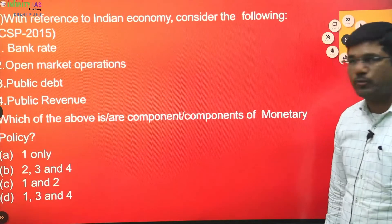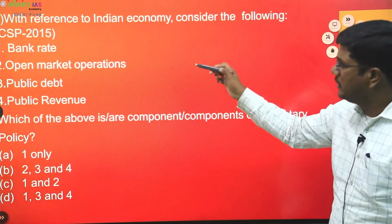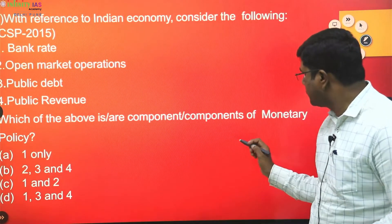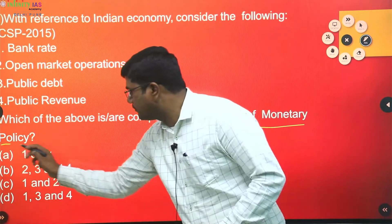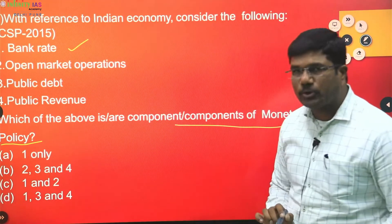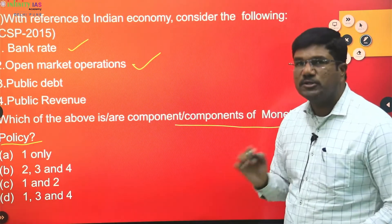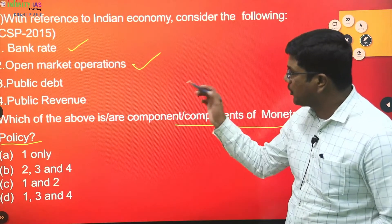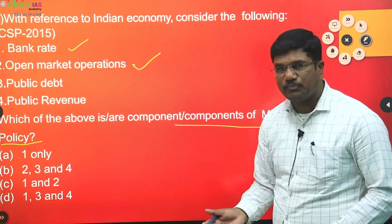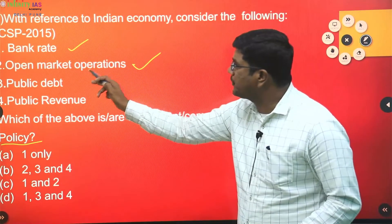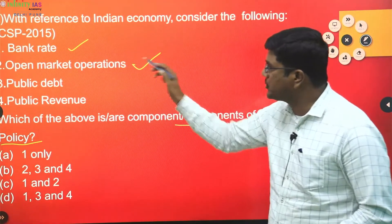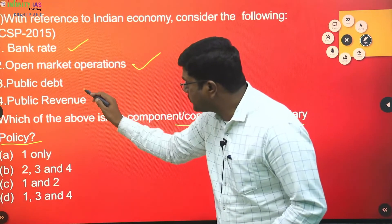Fourth question: with reference to the Indian economy, consider the following — bank rate, open market operations, public debt, and public revenue. You have been asked which are components of monetary policy. Bank rate — yes, it is a component of monetary policy. Open market operations — also a component of monetary policy. Bank rate is the rate at which RBI lends to commercial banks for the long term. Open market operations means sale and purchase of government securities by RBI.